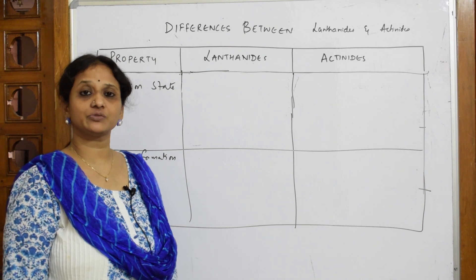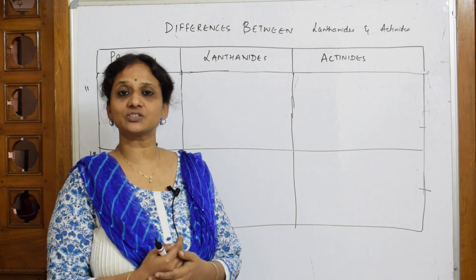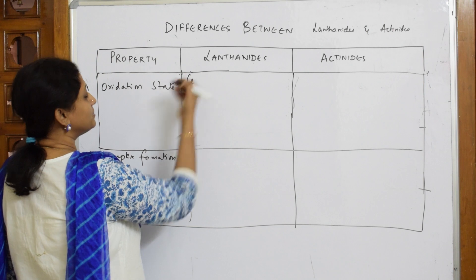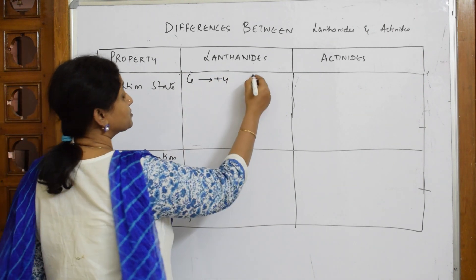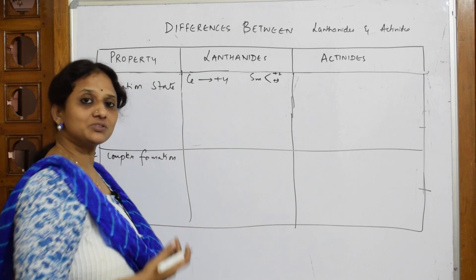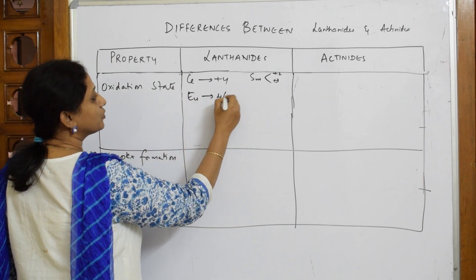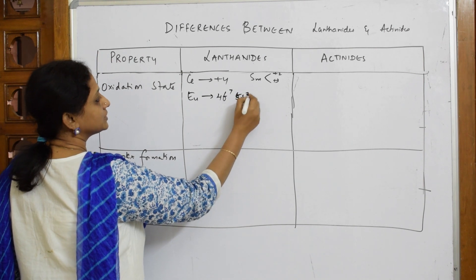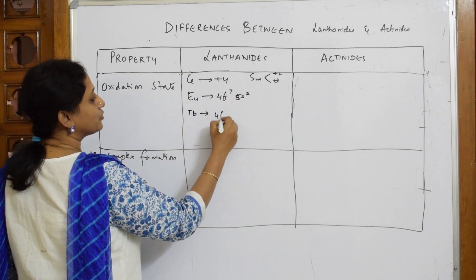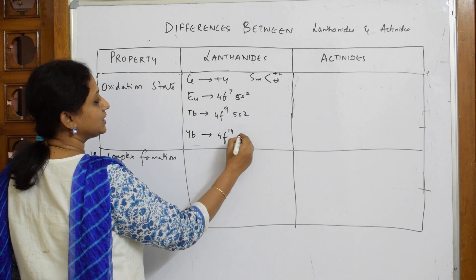Oxidation states depend on electronic configuration. In Lanthanides, cerium shows +4 and samarium shows +2 and +3. Europium with configuration 4F⁷5S² can lose two S electrons to show Eu²⁺ or lose one more to show Eu³⁺. Terbium with 4F⁹5S² can show Tb²⁺, Tb³⁺, or Tb⁴⁺ — losing electrons to reach the stable half-filled 4F⁷ configuration. Ytterbium with 4F¹⁴5S² prefers Yb²⁺ due to the stable completely filled configuration, and also shows +3.